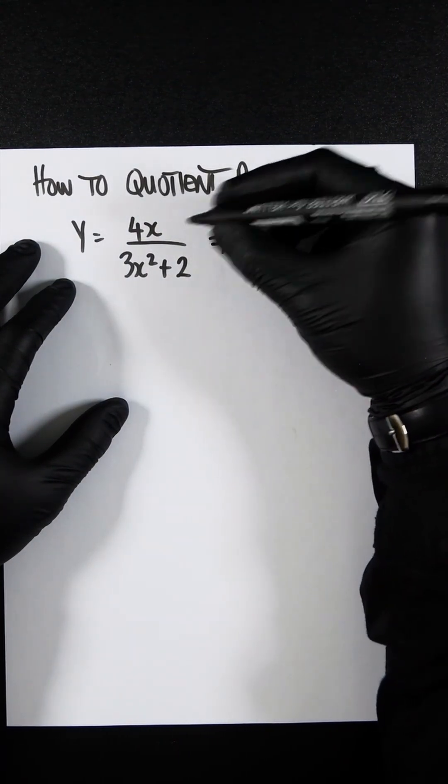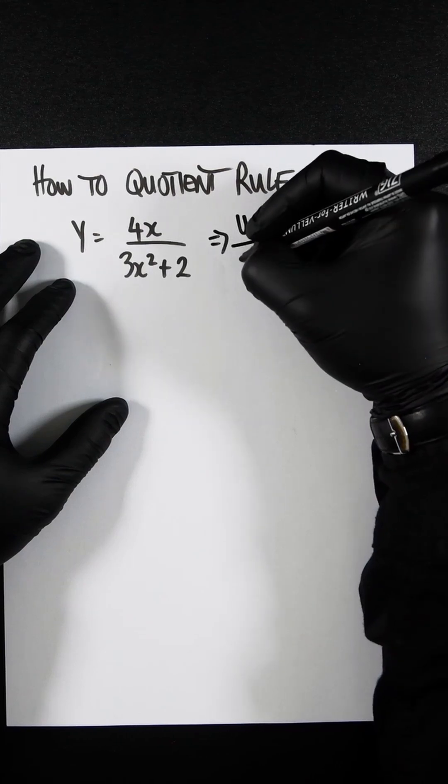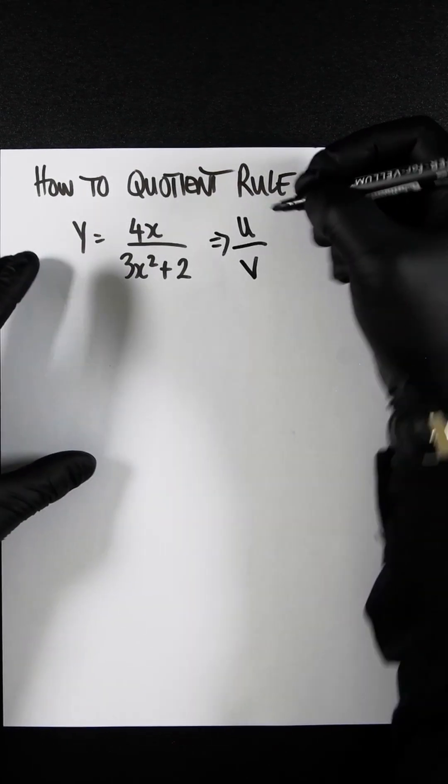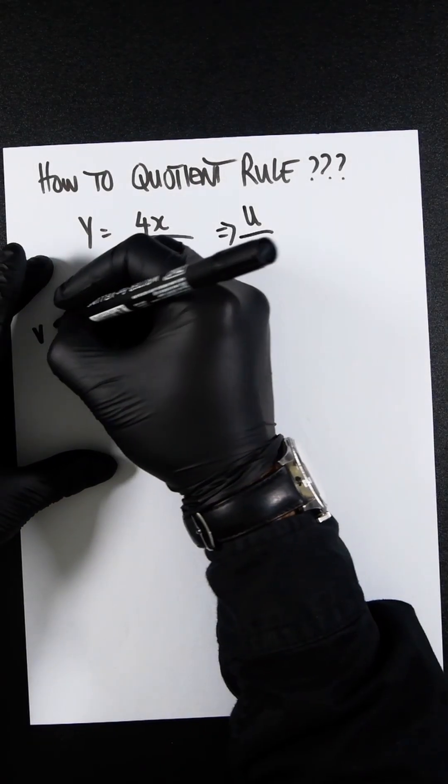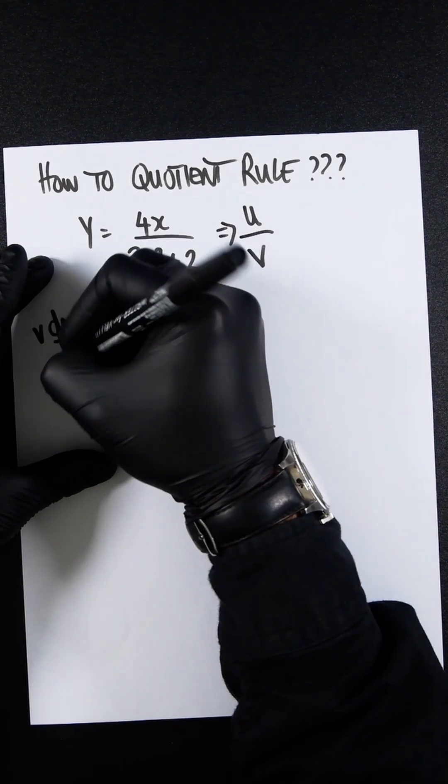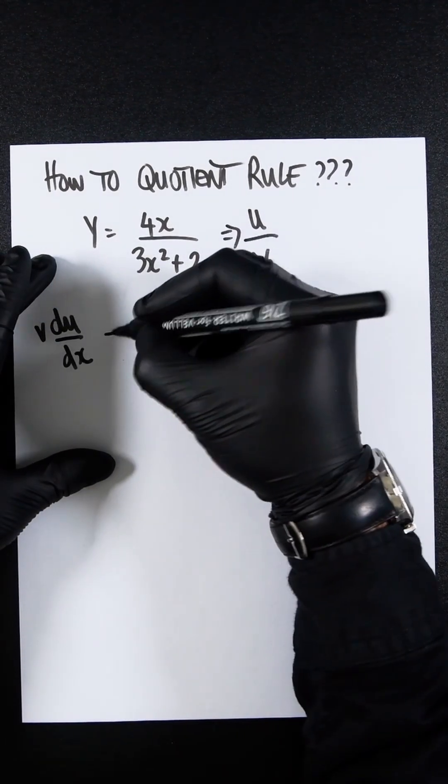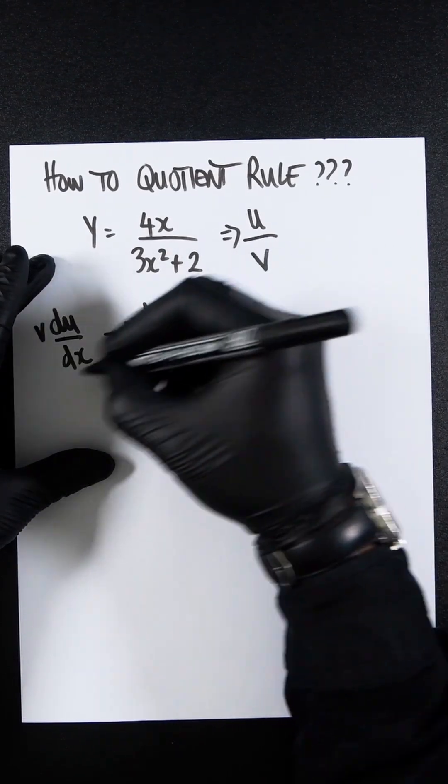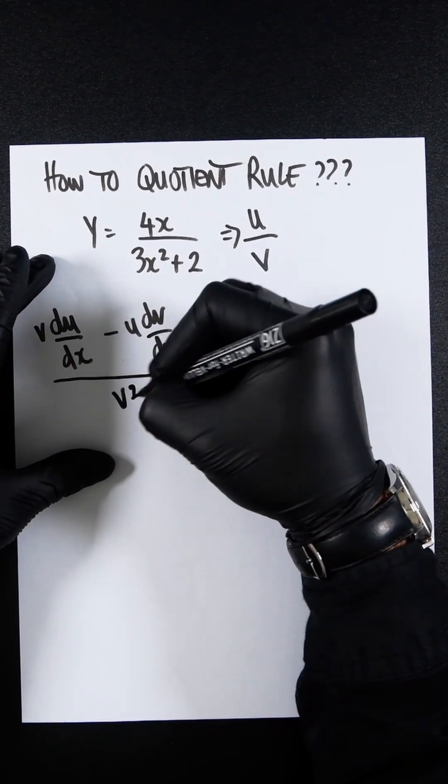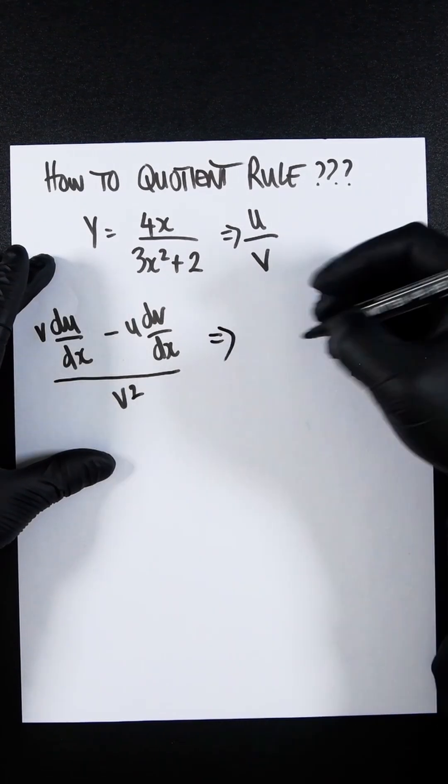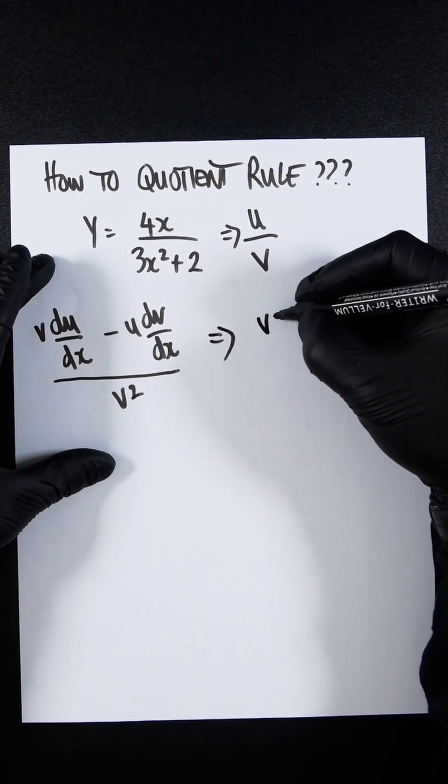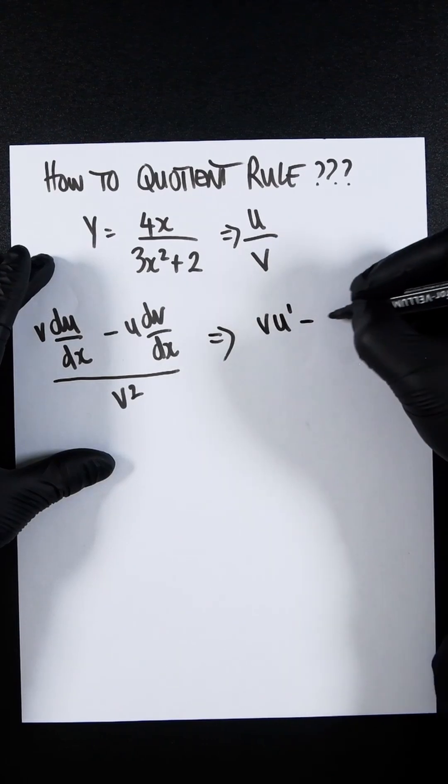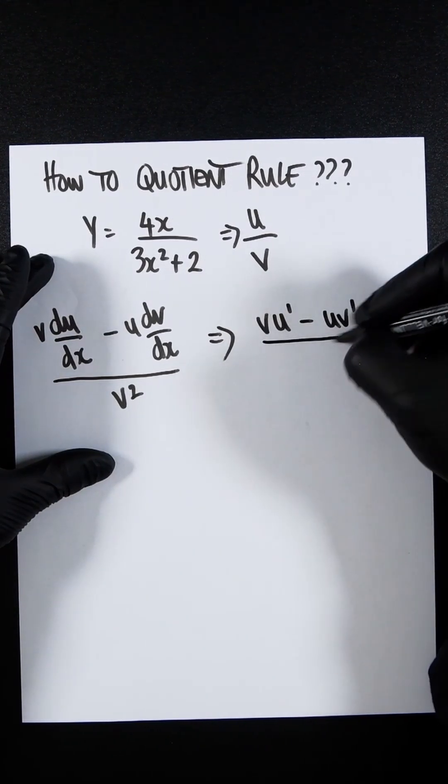The numerator is u and the denominator is v. The formula is v du over dx minus u dv over dx, all divided by v squared. This can also be represented by v u dash minus u v dash over v squared.